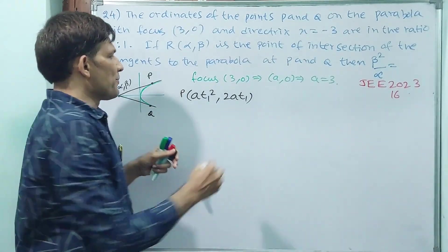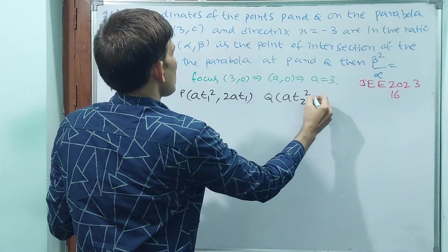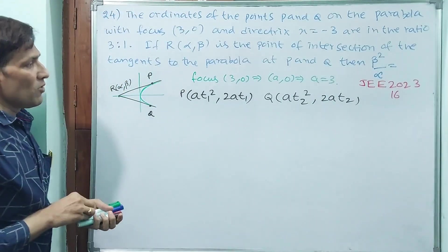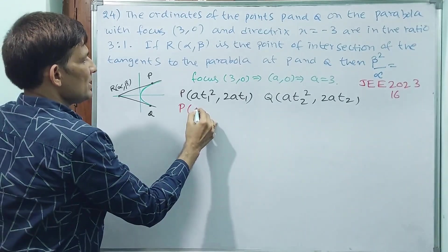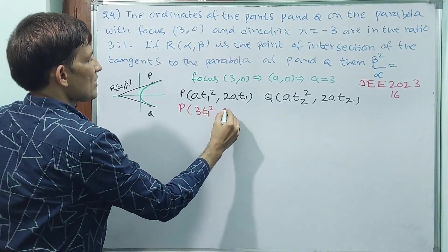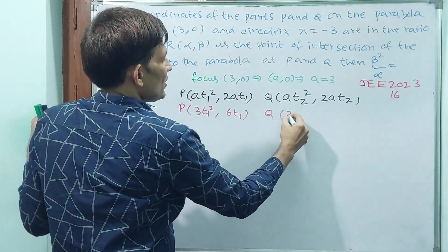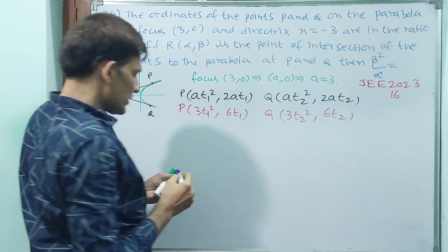What about Q? You take (at₂², 2at₂). Can you modify? Yes. Why? Because a value is 3. Then P value will be (3t₁², 6t₁), Q will be (3t₂², 6t₂).